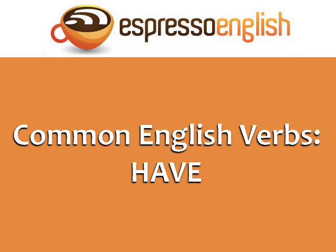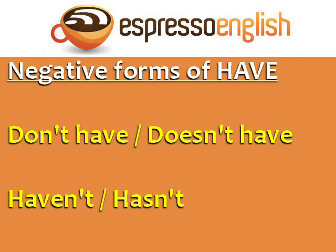Common English verbs: have. There are two ways to make the negative form of the verb have: don't have, or doesn't have, and haven't and hasn't.